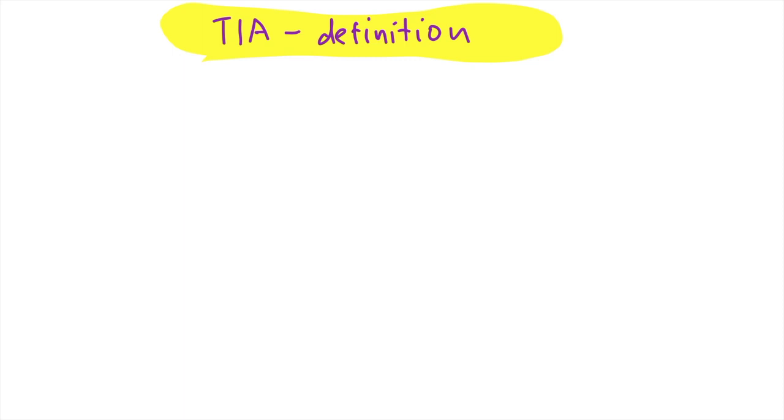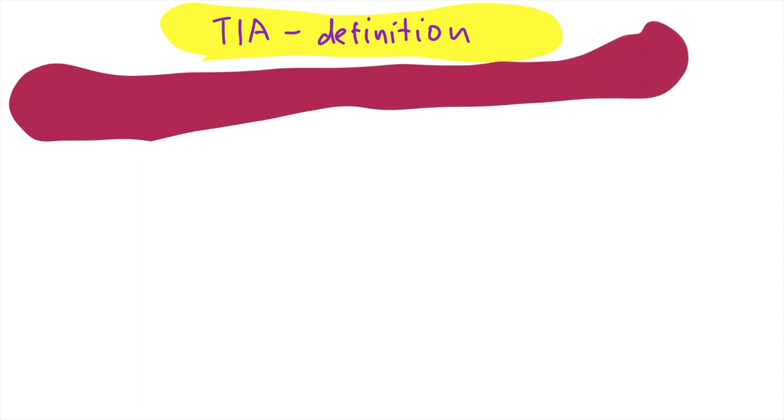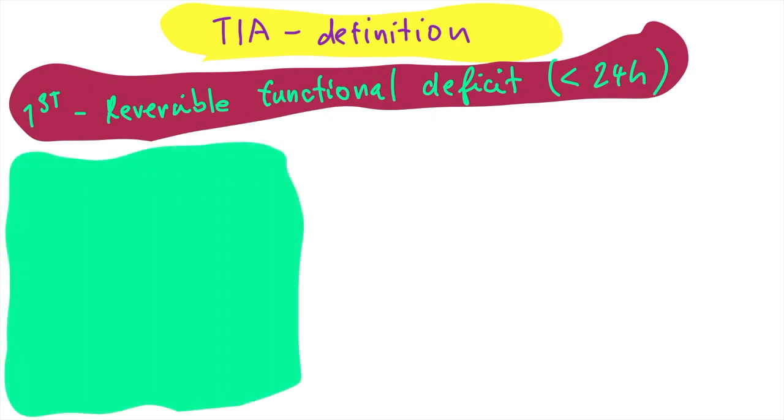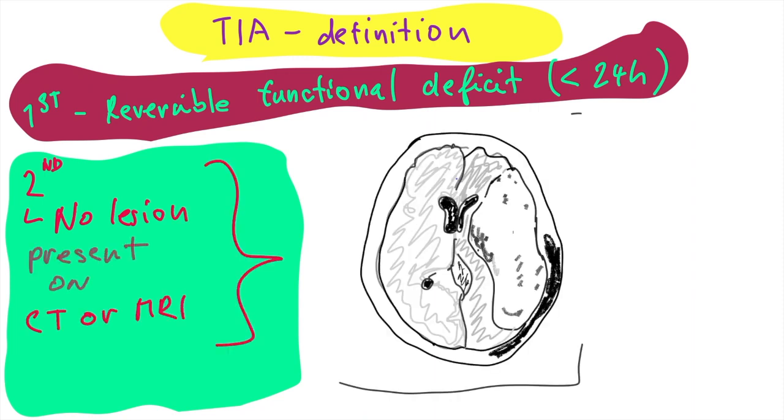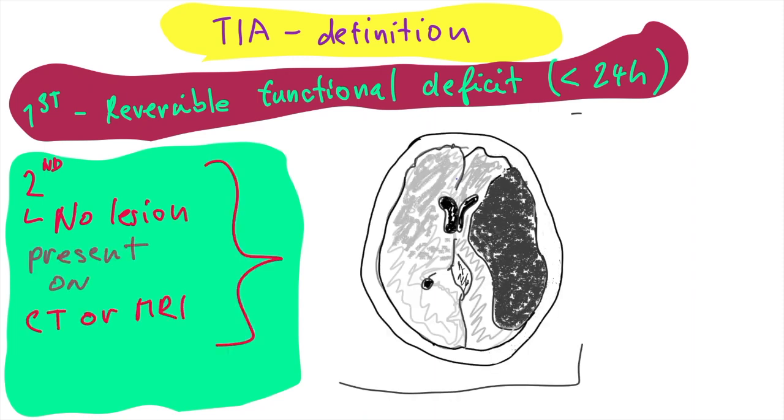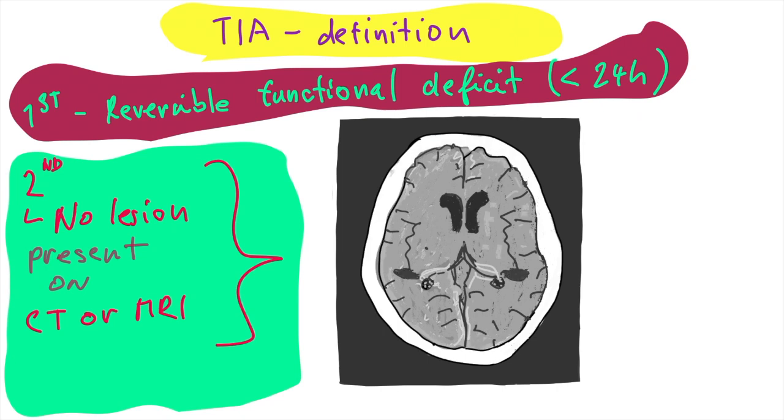So complete definition of transitory ischemic attack has two major conditions. First condition is the fully reversible functional deficit that normalizes within 24 hours. The second crucial condition is that there is no structural lesion found on CT or MRI, or to be even more precise, no fresh lesions present on CT or MRI.